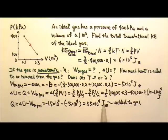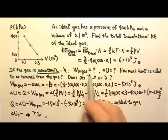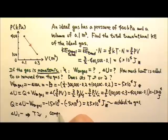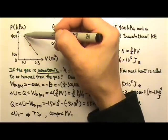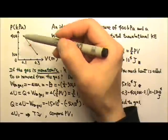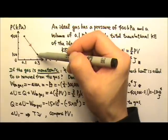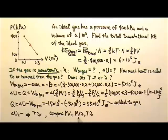Next we need to find out what happens to the temperature. Since ΔU is negative, the temperature decreases because the internal energy decreases. Another way to tell is to compare PV: the initial PV is 400 kPa × 0.1, and the final PV is 100 kPa × 0.3. Initial is 4 times some constant and final is 3 times that constant, so PV decreases, meaning temperature decreases since PV is proportional to temperature.